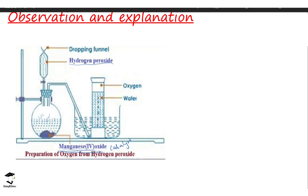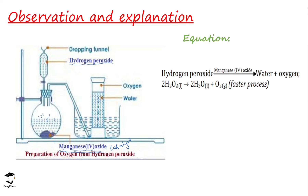This is the equation for the reaction: hydrogen peroxide decomposes to form water and oxygen. When writing the equation, make sure you include the catalyst — manganese(IV) oxide — written on top of the arrow. This is a faster process because of the catalyst. Later in Form 2 we will look at writing and balancing chemical equations.